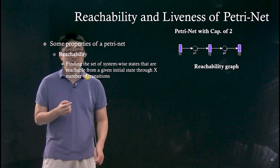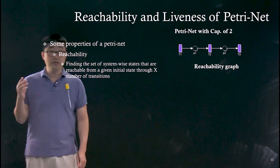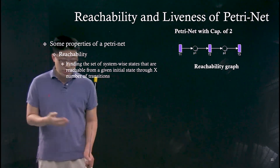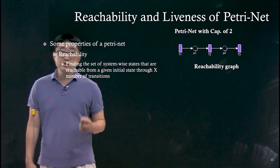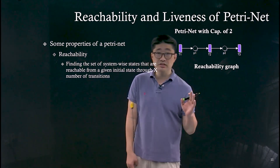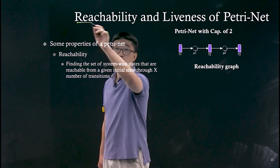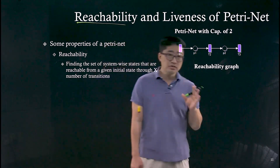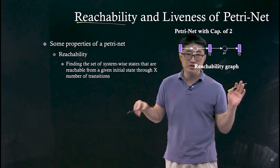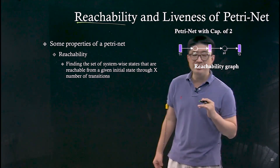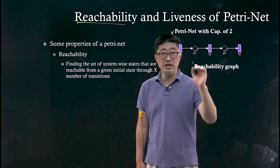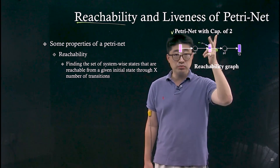Now that we understand the graphical notation, mathematical notation, and how to simulate Petri nets, it's time for analysis. The typical analysis on the simulation of a Petri net is the reachability analysis. We need a sample Petri net for an analysis case, and we are going to introduce this Petri net with three transitions and two places.